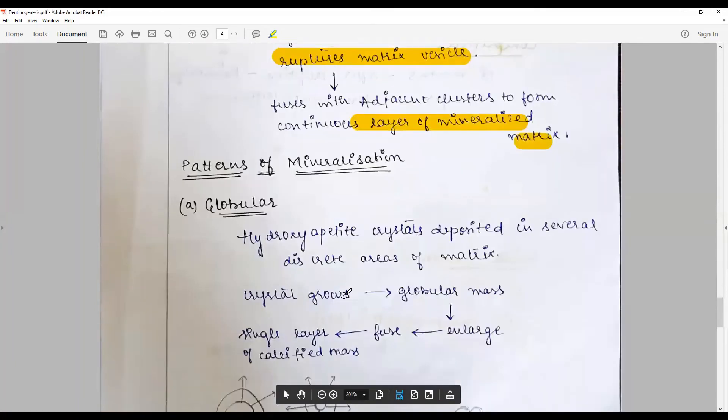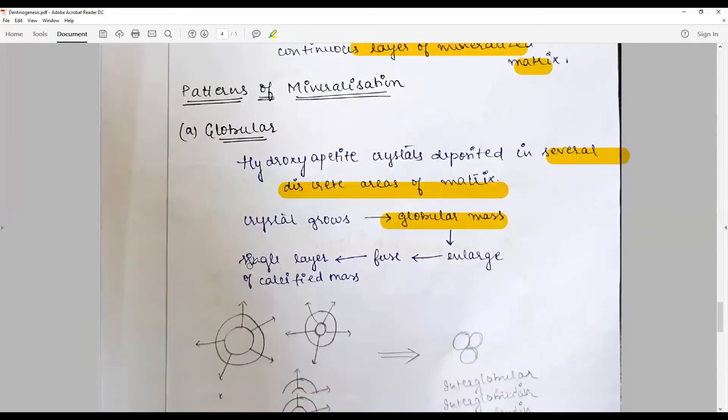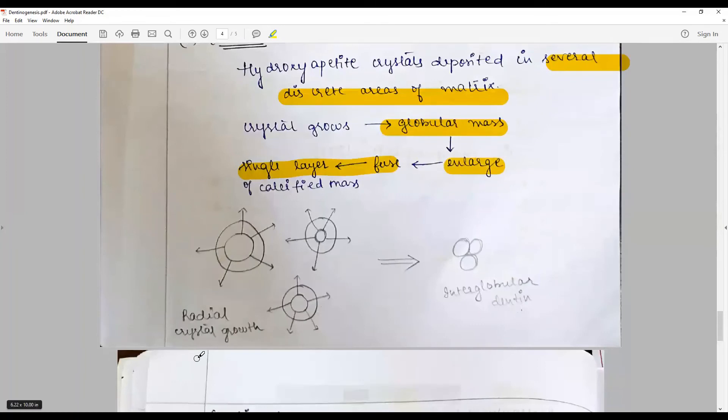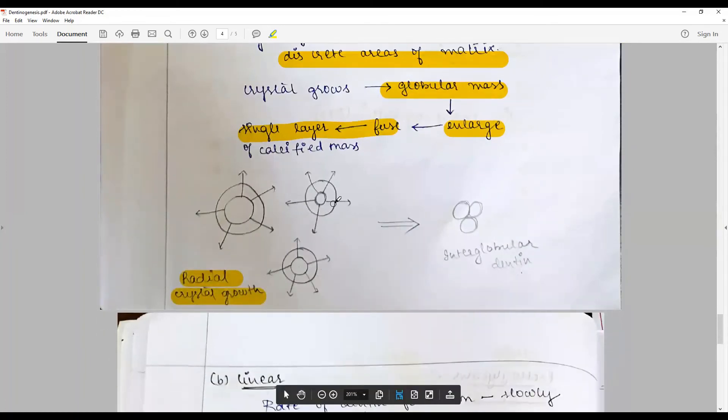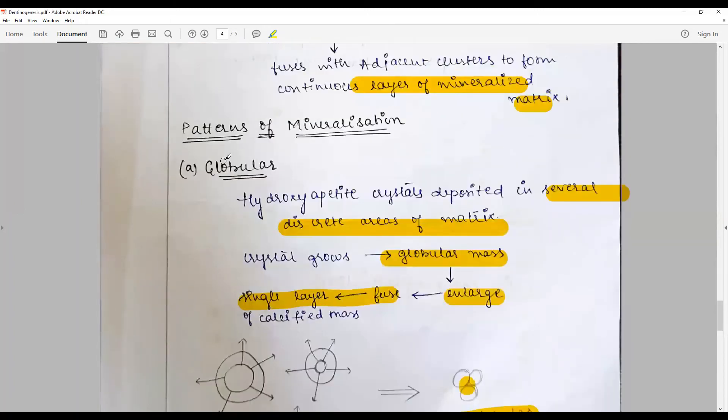The pattern of mineralization is mostly globular, where hydroxyapatite crystals are deposited in several discrete areas of matrix. They grow and enlarge to form globular masses that fuse to form a single layer of calcified mass that subsequently enlarges. This phase is called radial crystal growth. The areas devoid of mineralization constitute interglobular dentin.